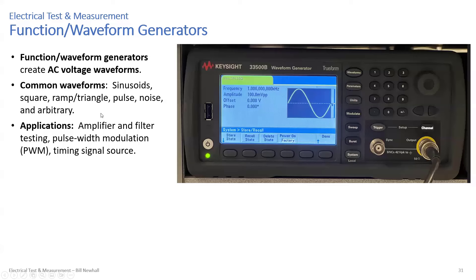Applications of waveform generators include amplifier testing: provide a sine wave input to an amplifier, measure the output with an oscilloscope, and that tells you the gain. You can test filters by sweeping across frequencies and measuring the output amplitude to measure the frequency response. You can create PWM pulse-width modulated signals to control the speed of a motor in place of a microcontroller, which you're going to do in lab. You can also create a timing signal source, like pulses once per second simulating a GPS pulse-per-second.